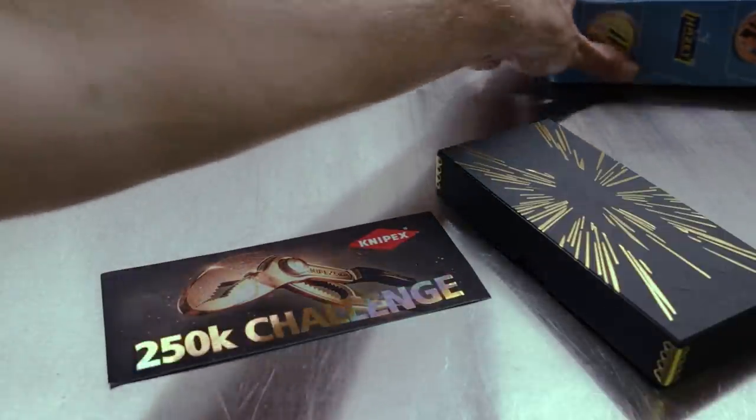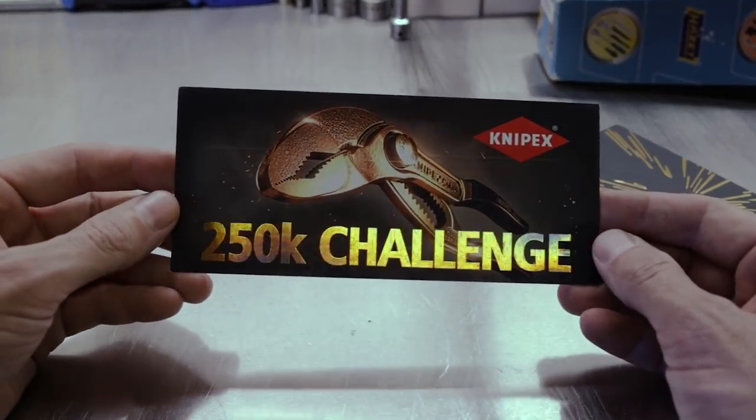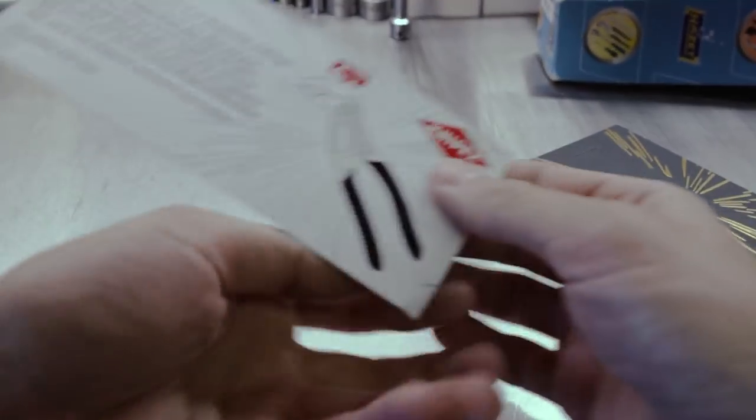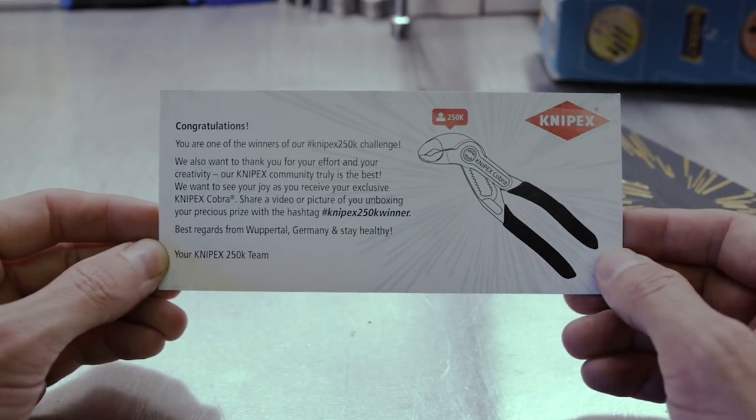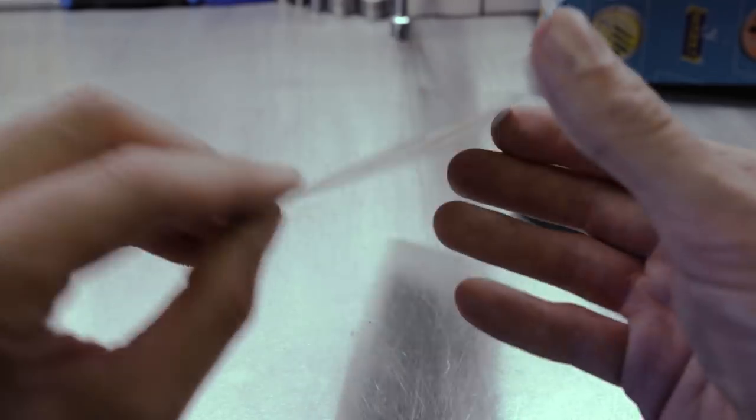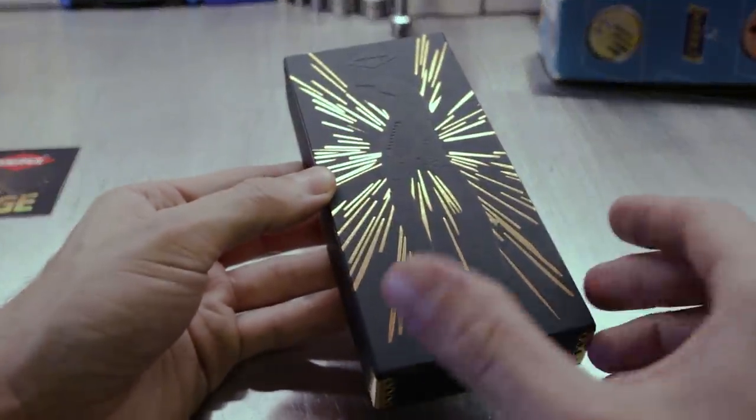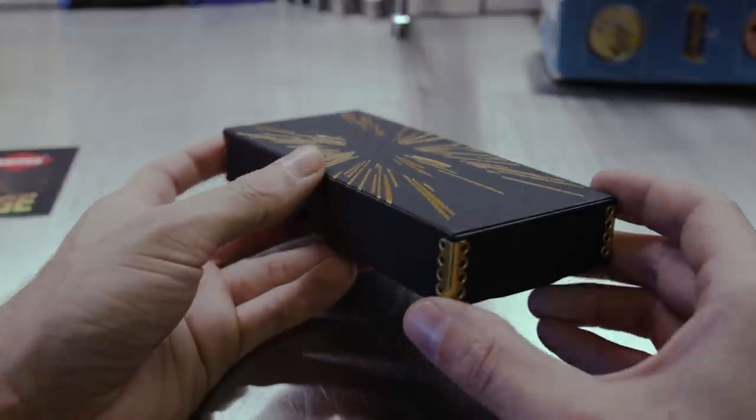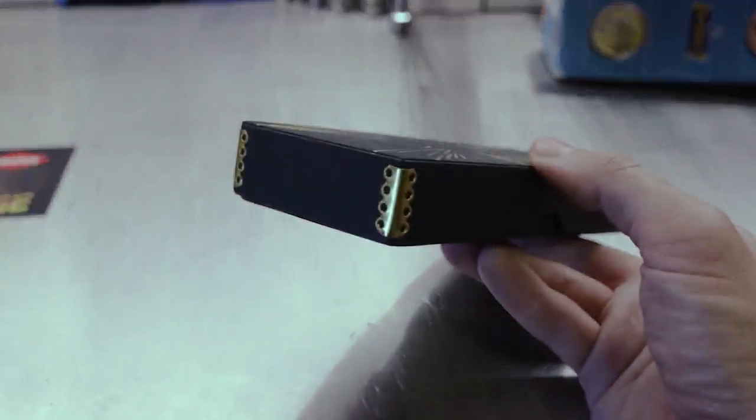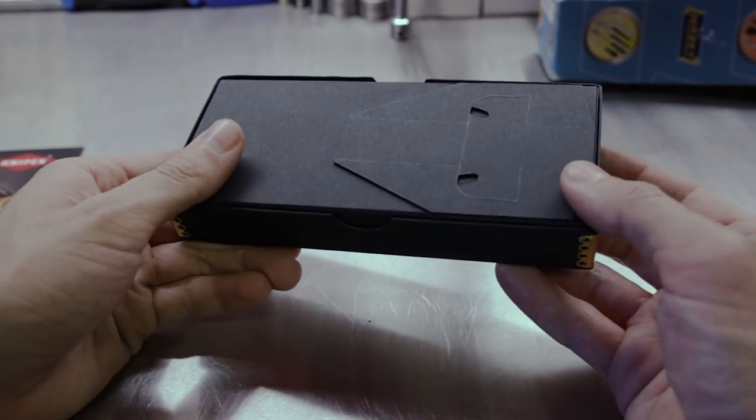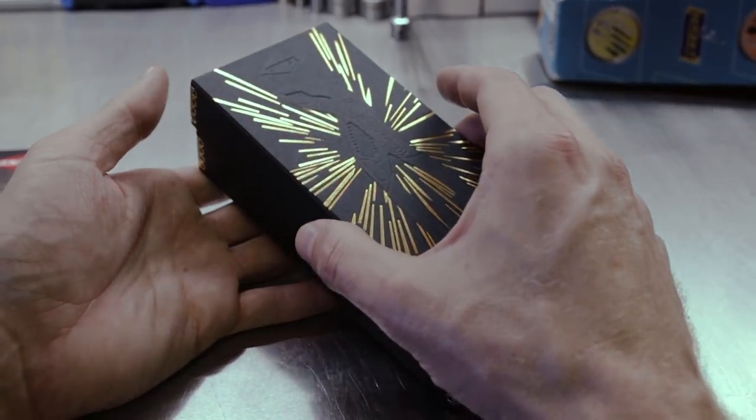So we'll push this off to the side for now and start off with the cream of the crop, the Knipex 250k challenge gold cobras. So this was the little postcard that Knipex included in the packaging, just saying congratulations on winning, with the cool little reflective text there on the postcard. But on to the actual gold cobras themselves. Nice matte black box with the gold leaf on it. I believe these are actually little metallic gold corners in the box here. It's also a display box because on the back you've got a little display kickstand to show this off. So without further ado, let's go ahead and open this up and take a look.